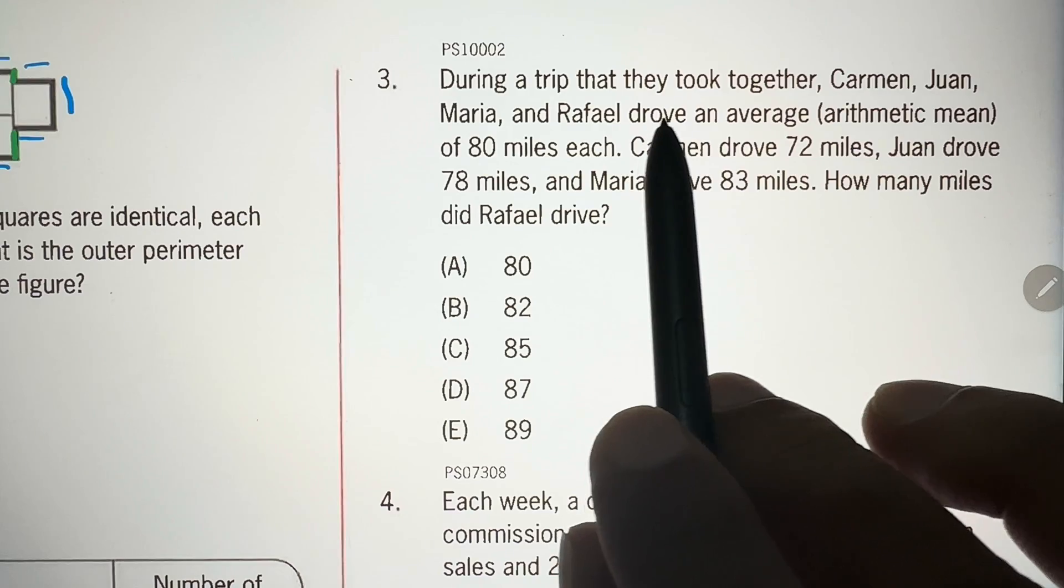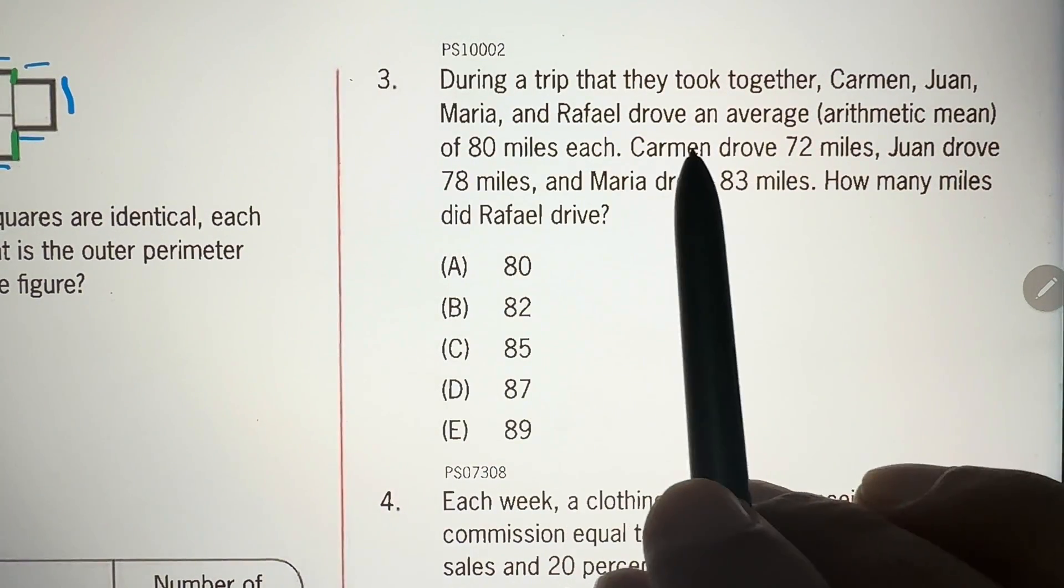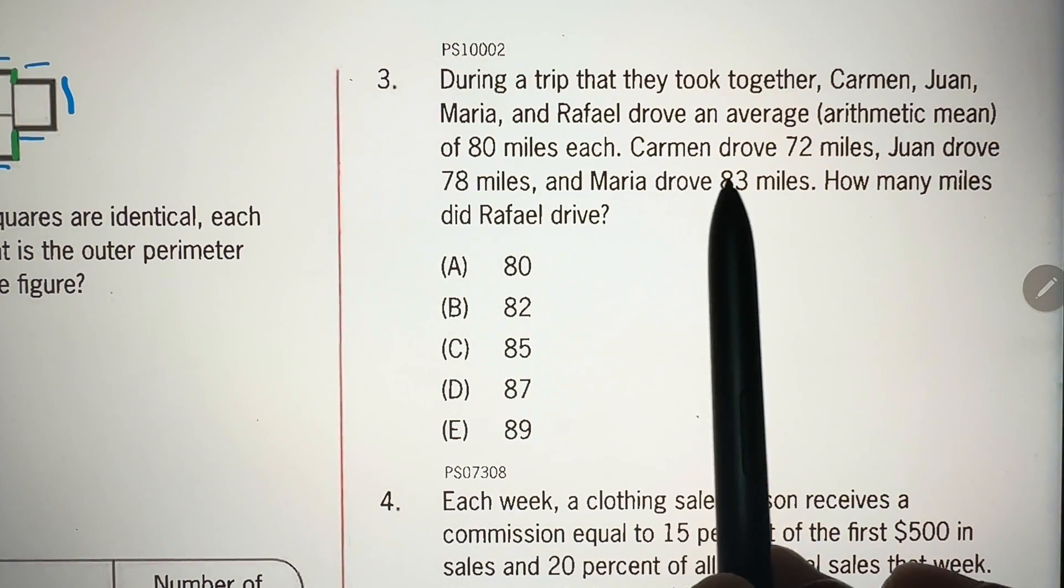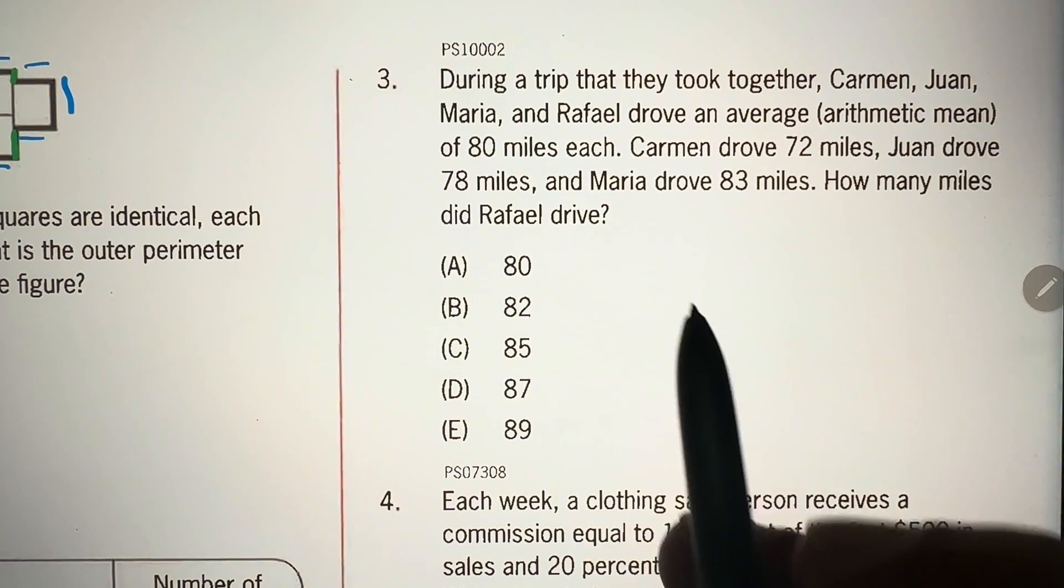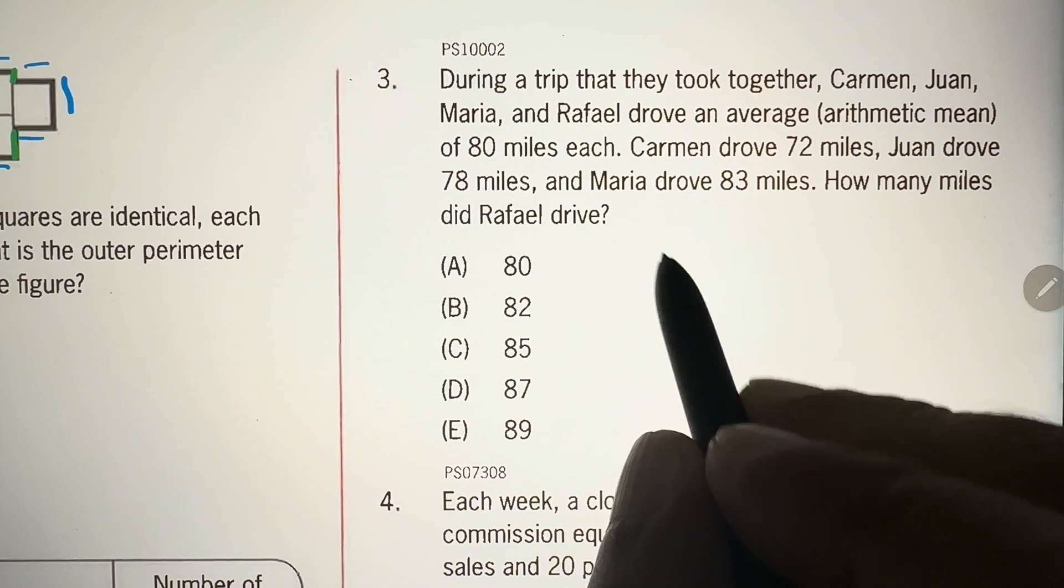During a trip that they took together, Carmen, Joan, Maria and Rafael drove an average arithmetic mean of 80 miles each. Carmen drove 72 miles, Joan drove 78 miles, and Maria drove 83 miles. How many miles did Rafael drive?